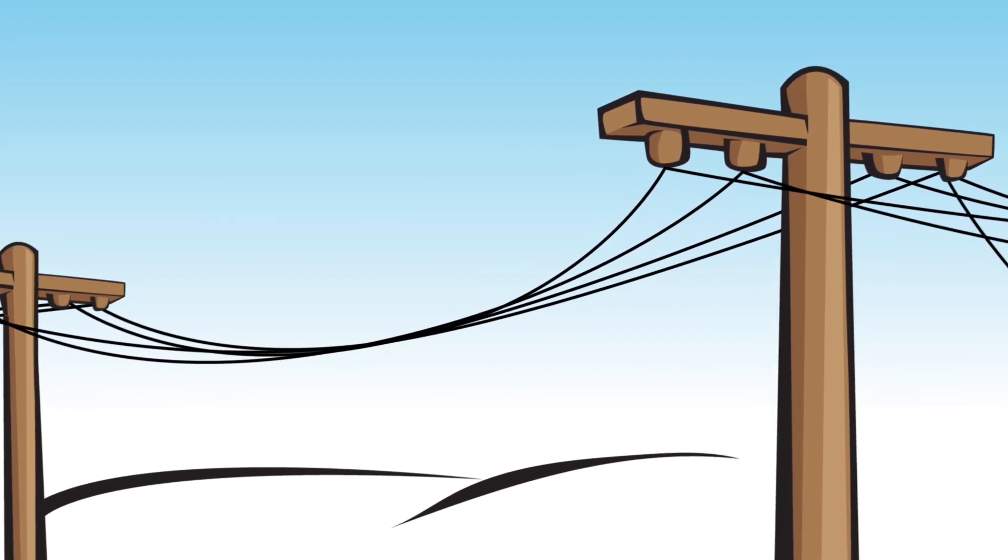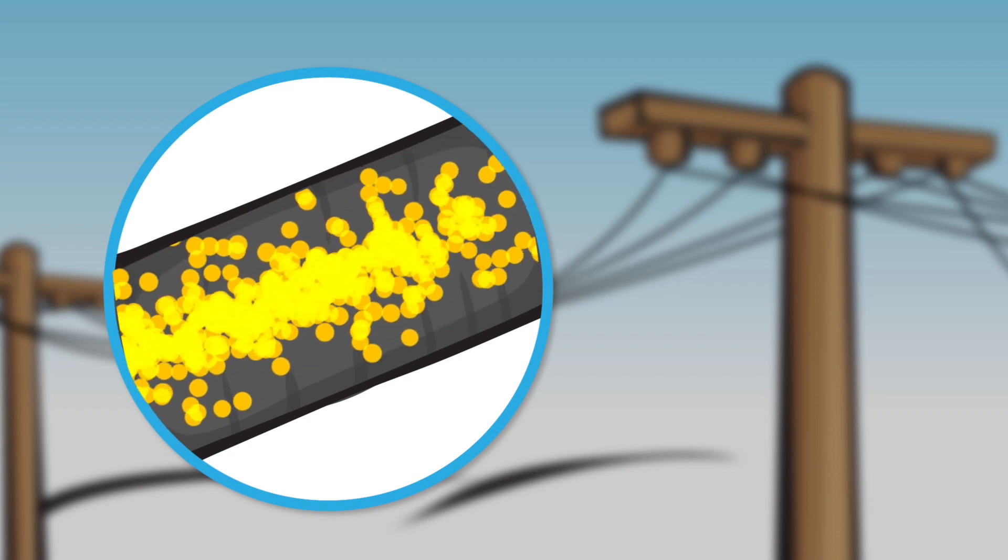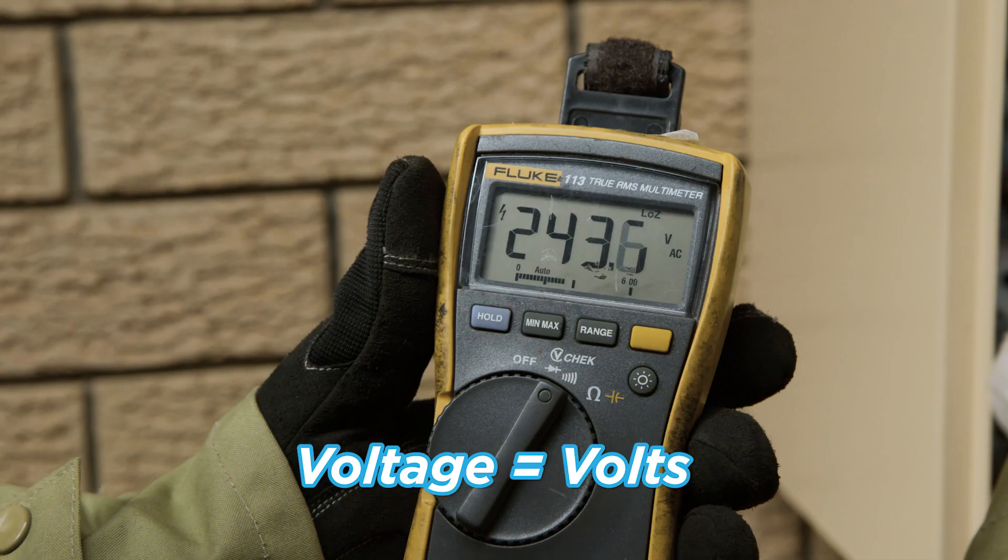The pressure under which electrons flow is known as voltage and is measured in volts.